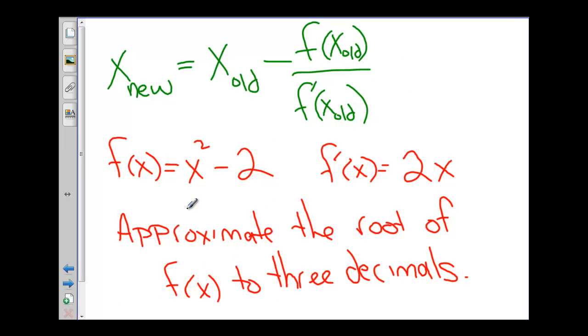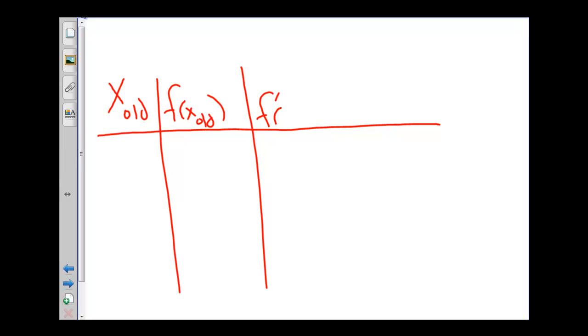And the easiest way to solve and work with these problems is by making a table. So I'm going to start with my x old. We're going to work out what the f of x old is, what f prime of x old is, and what x new is. And we're going to compute the values for these until we get fairly close.